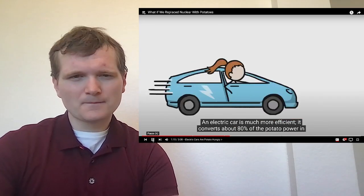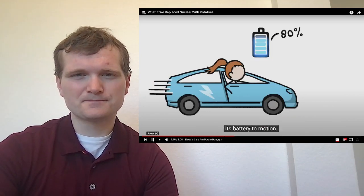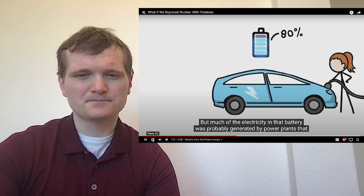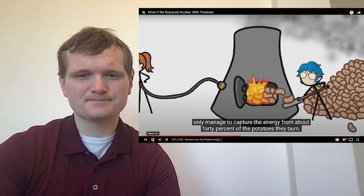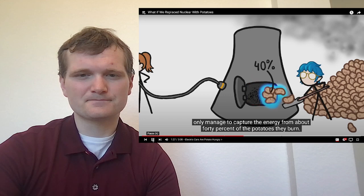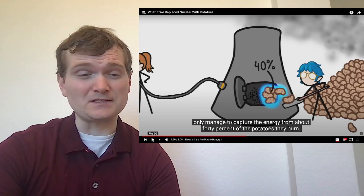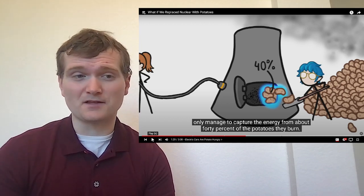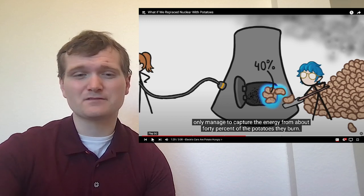An electric car is much more efficient. It converts about 80% of the potato power in its battery to motion. But much of the electricity in that battery was probably generated by power plants that only managed to capture the energy from about 40% of the potatoes that they burn. 40% is actually pretty good for efficiency in most thermal cycles, usually on the order of 30 to 35, 33-ish.